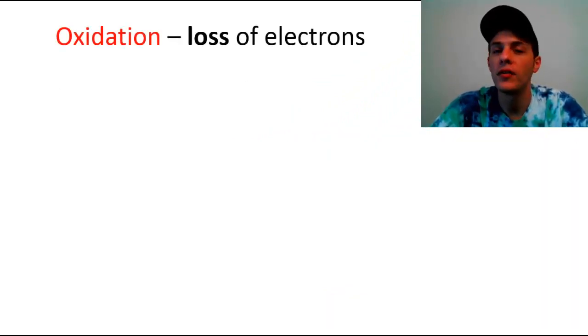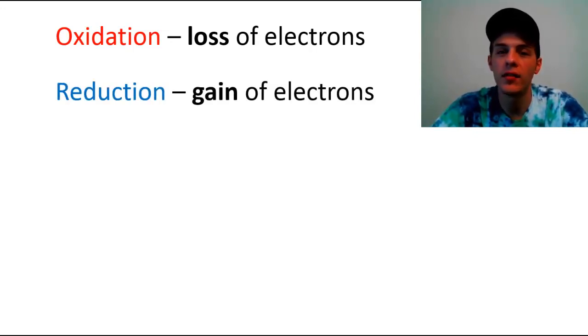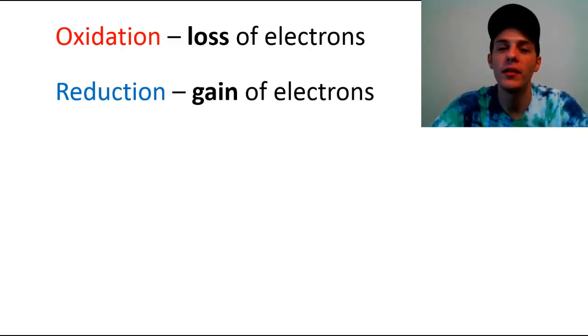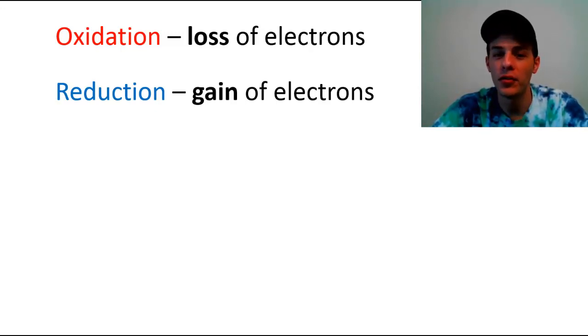So what exactly is oxidation? What exactly is reduction? Well, in the simplest sense, oxidation is simply the loss of electrons and reduction is the gain of electrons. So if something is being oxidized it's losing electron density, and if something is being reduced that means it's gaining electron density.